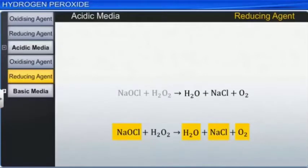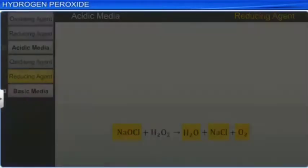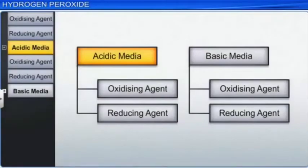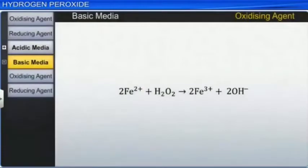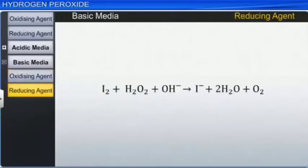Now let's look at the reactions that take place in basic media. Here, as an oxidizing agent, hydrogen peroxide reacts with ferrous ions to form ferric ions. As a reducing agent, it reacts with iodine to form iodide ions along with water and oxygen.